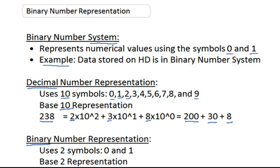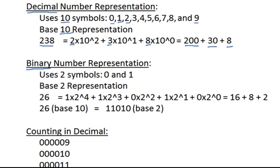Now let's take a look at the binary number system and see the similarities between the two. As we said before, in the binary number system we use two different symbols — those symbols being 0 and 1. Since we only have two symbols, we call this base 2 representation. This means we represent our numbers as sums of powers of 2. Let's look at another example — starting with a number we all know: 26 in base 10.